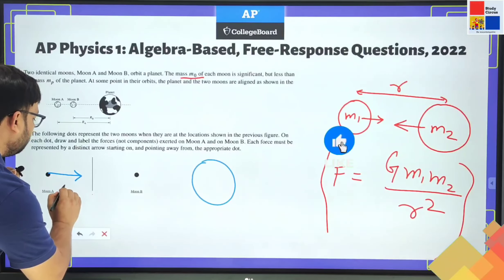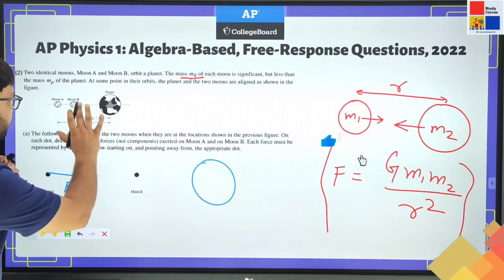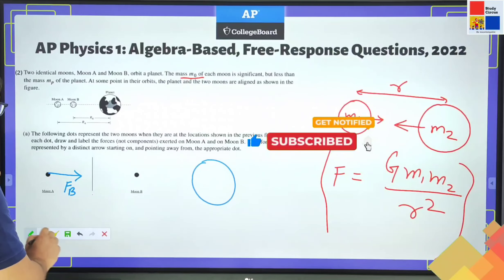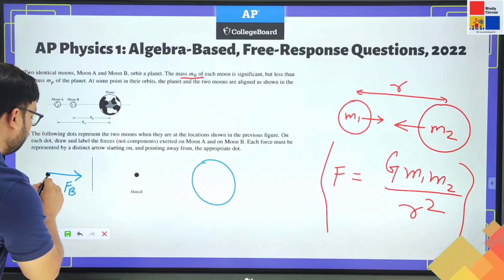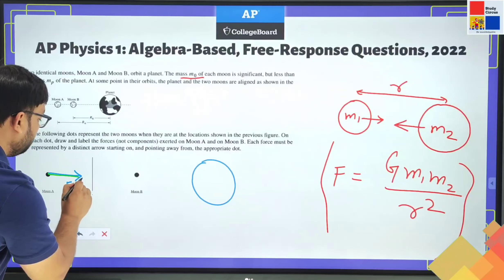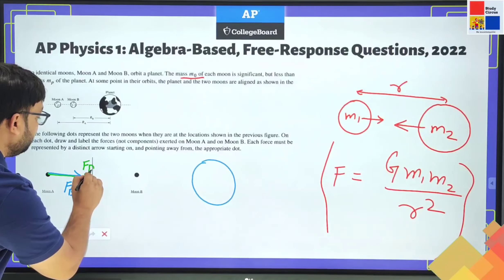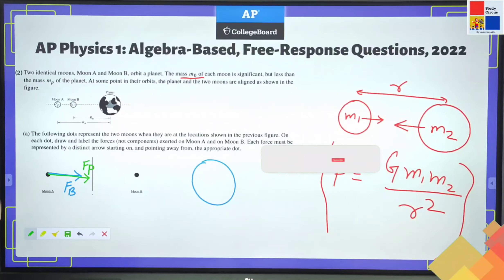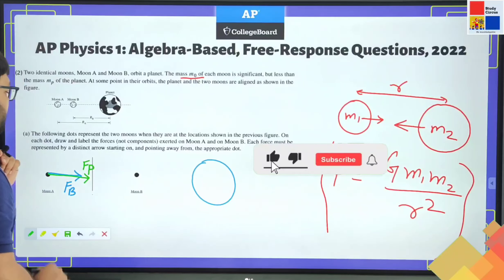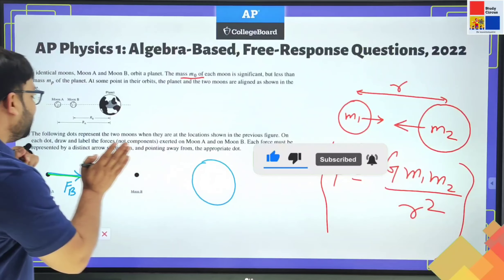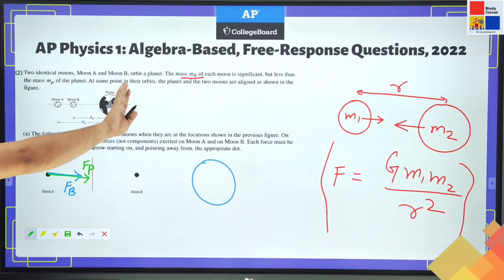One is the force due to moon B, and there is one more force that is due to the pull of the planet. So there is another force in the same direction, the force due to the planet. I represent that force by FP. So these are the two forces on moon A, and they are in the same direction this way.